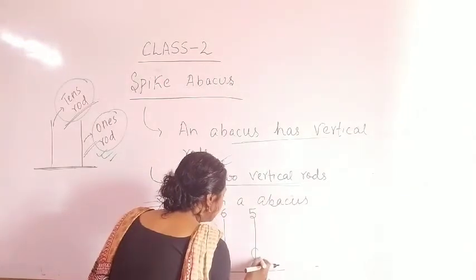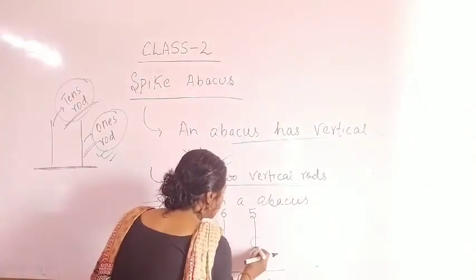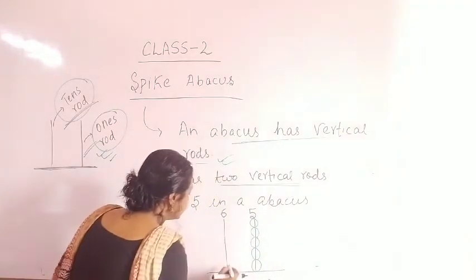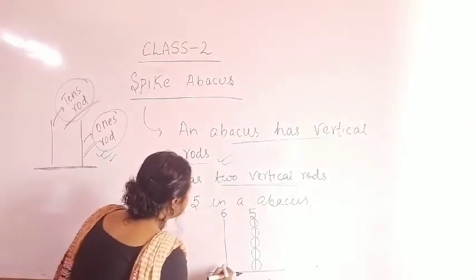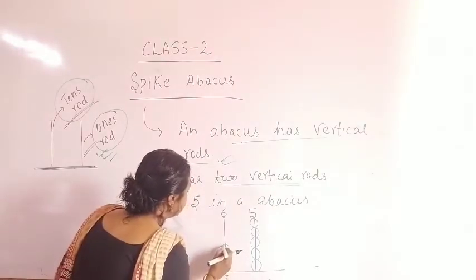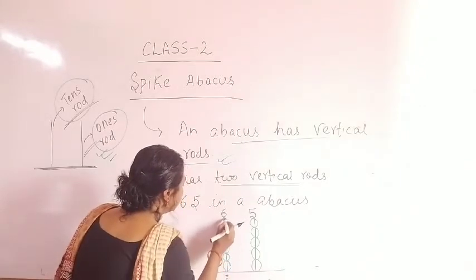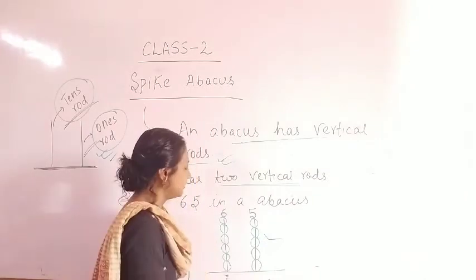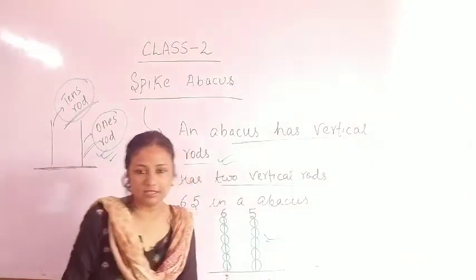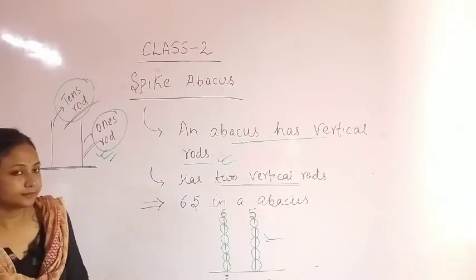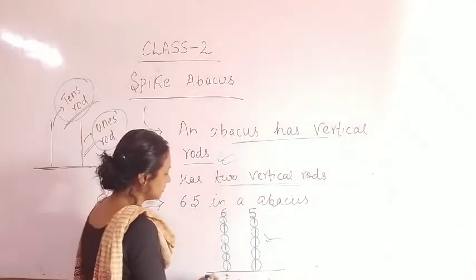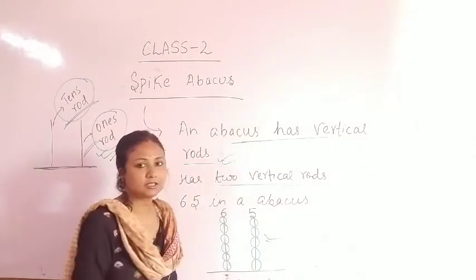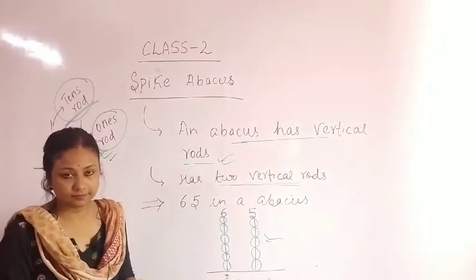We draw 5 circles on the 1's place: 1, 2, 3, 4, and 5. Then 6 beads on the 10's rod: 1, 2, 3, 4, 5, and 6. So 65 is shown with 6 in the 10's place and 5 in the 1's place. Thank you, we continue in the next video.